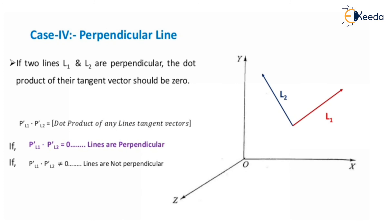Next case: perpendicular line. If two lines l1 and l2 are perpendicular, the dot product of their tangent vectors should be 0: p_l1′ · p_l2′ = 0 when lines are perpendicular; not equal to 0 means lines are not perpendicular. To summarize: for parallel lines, the cross product of tangent vectors is 0; for perpendicular lines, the dot product of tangent vectors is 0.